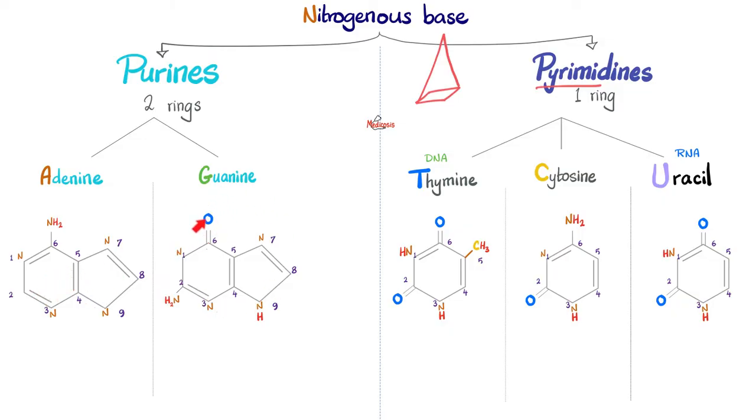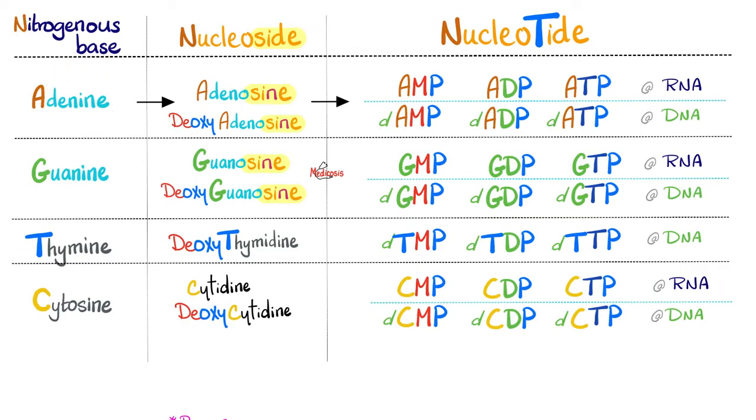Here is guanine, it has oxygen here. Here is thymine, it has two oxygens. And it has a methyl here. Cytosine has an amino and an oxygen. Uracil has oxygen, oxygen, but no methyl. Here is the base and then add a sugar, it becomes nucleoside. If you add ribose sugar, adenine will become adenosine. If you add deoxyribose sugar, adenine will become deoxyadenosine. This is a nucleoside.